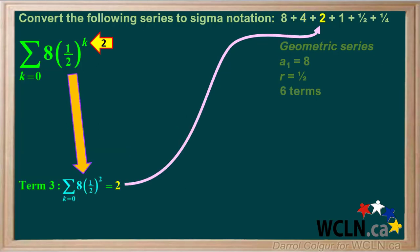For term 3, we'll put in 2 for k, so we get 8 times 1 half squared, which is equal to 8 times 1 quarter, or 2, which is the correct value for term 3.